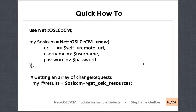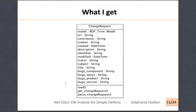Here is a quick how-to. You just have to instantiate a class — Net OSRCCM new — and you have to provide three arguments: the URL of the bug tracker you want to connect to, and your credentials — the username and the password — because it is using HTTP basic authentication. The next step is just to call the getOSRCresources method, and it will return an array of change requests. Here are the attributes you will get.